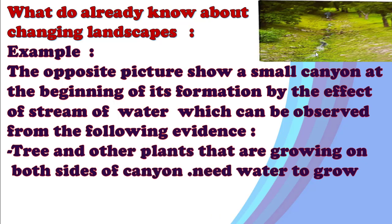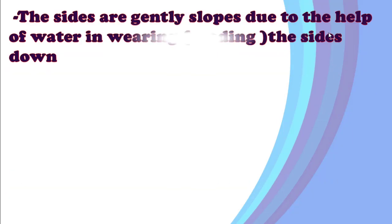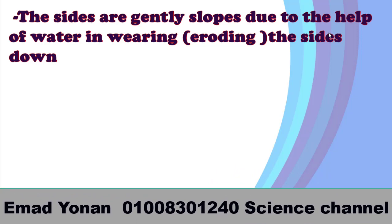You can see trees and other plants growing on both sides of the canyon, which need water to grow. The trees on the side of the canyon depend on the water that moves along this path. The sides are gently sloped due to the help of water in wearing or eroding the sides down. If the water moves gently, it erodes and wears the rocks slowly.